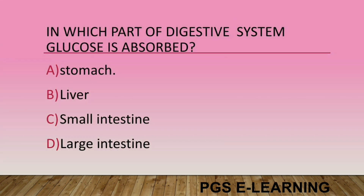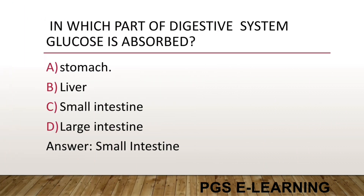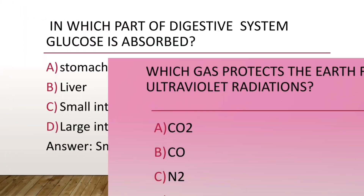In which part of the digestive system is glucose absorbed? Option A, stomach. Option B, liver. Option C, small intestine. Option D, large intestine. Correct answer is small intestine.